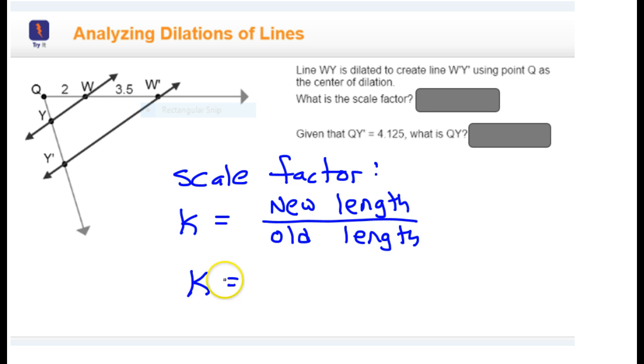Okay, so in this case, let's talk about the distance from the center of dilation Q. You can tell that this is the original distance, from here to here, because the point is labeled W. If it were the new point, it would be labeled W prime. That's how I know that this distance is the new distance.